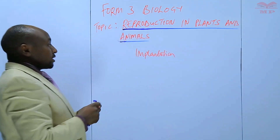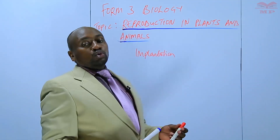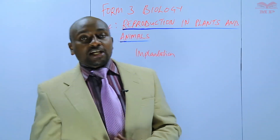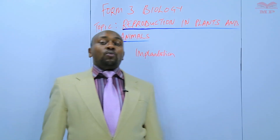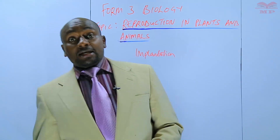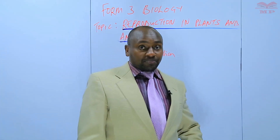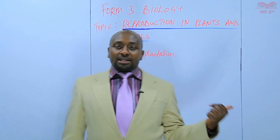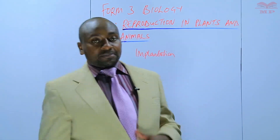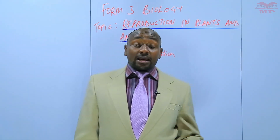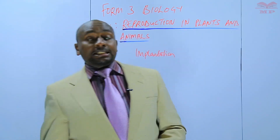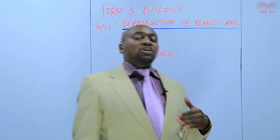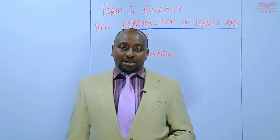Implantation is what follows after fertilization. Fertilization occurs within the oviduct and leads to the formation of a zygote. The zygote then starts moving towards the uterus where implantation will take place. As the zygote moves along the oviduct, it undergoes a series of mitotic divisions — it divides by mitosis.